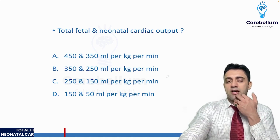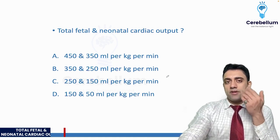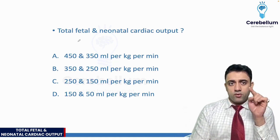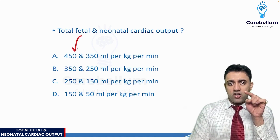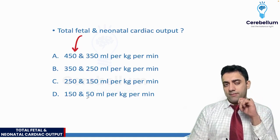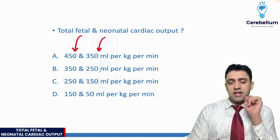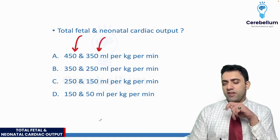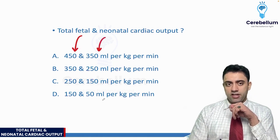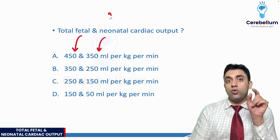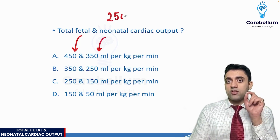Total fetal and neonatal cardiac output — a very commonly asked question. Remember: total fetal cardiac output is 450 ml per kg per minute, neonatal cardiac output is 350 ml per kg per minute. Remember 450, 350, and 250.